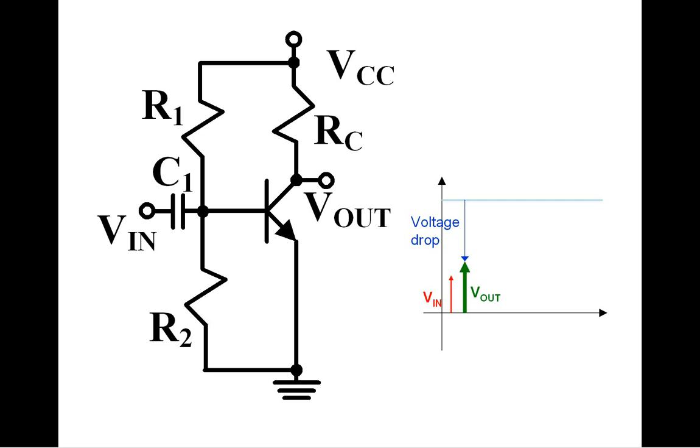By increasing voltage on the transistor base, collector current increases exponentially. So the output voltage drops since Vout equals VCC minus collector current times RC.